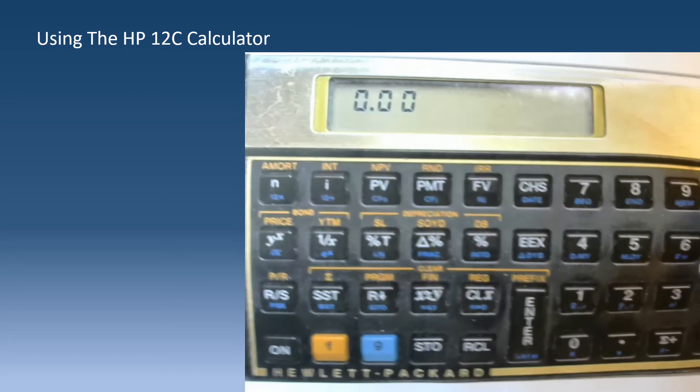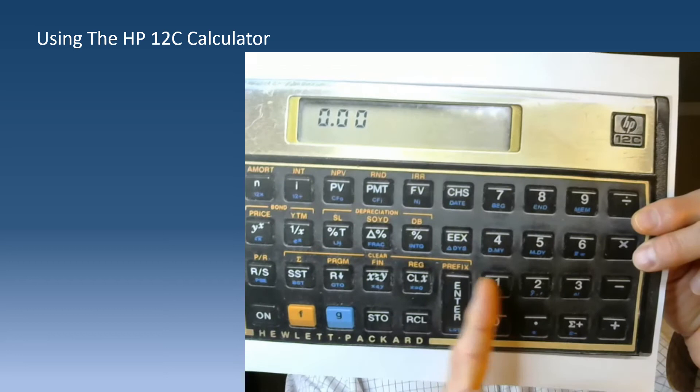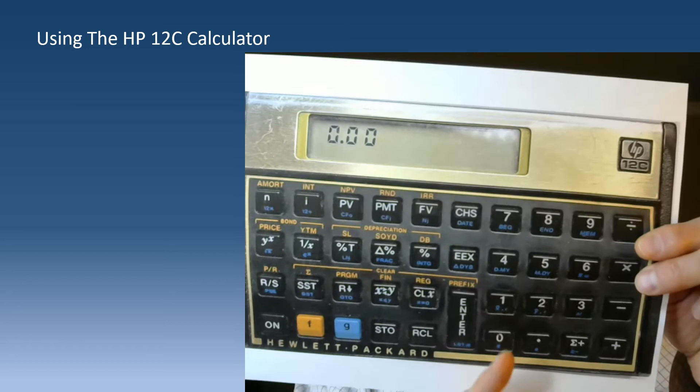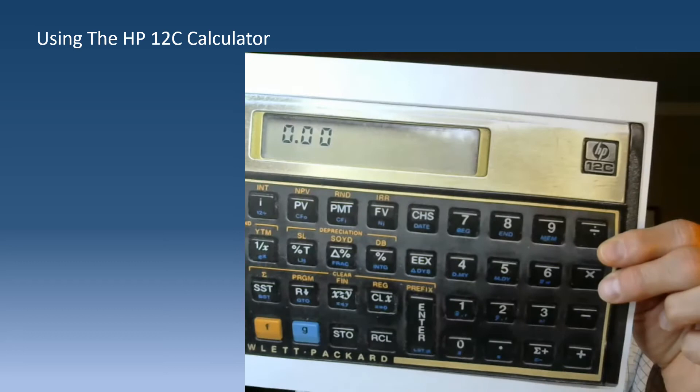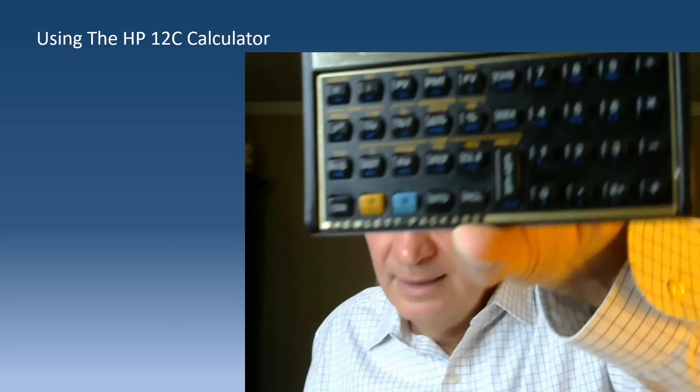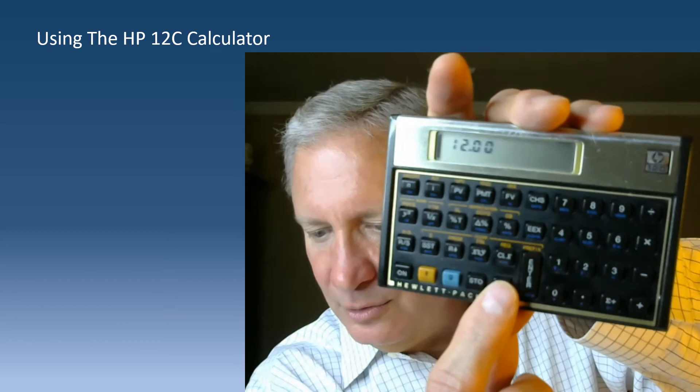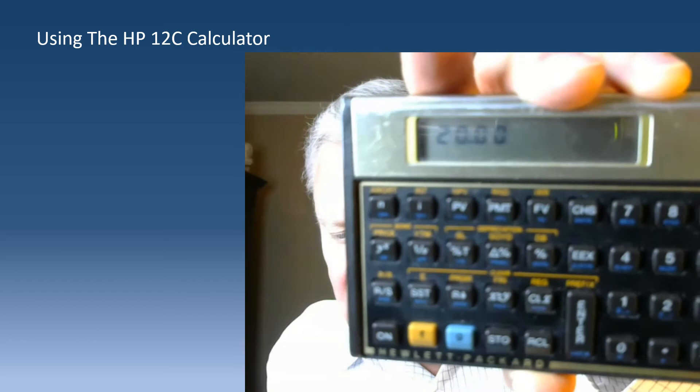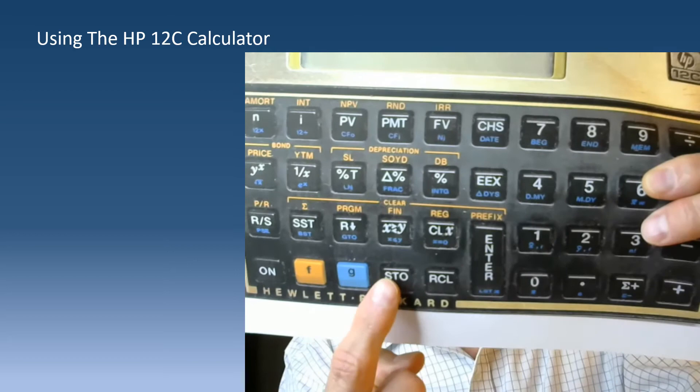This calculator has at least nine and I believe ten storage locations. To store something, enter the number - say 12 - hit store, then 1, and it puts it in register 1. Enter 20, store, 2, and it's in register 2. To pull them back out, hit recall, 1 to get the 12 back, and recall, 2 to get the 20. You can store all kinds of numbers across those nine or ten storage locations.